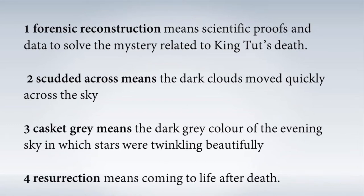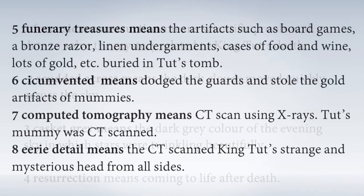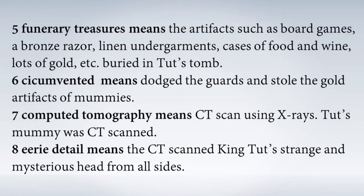Forensic reconstruction means scientific proofs and data to solve the mystery related to King Tut's death. Scudded across means dark clouds moved quickly across the sky. Casket gray means the dark gray color of the evening sky in which stars were twinkling beautifully. Resurrection means coming to life after death. Funerary treasures means artifacts such as board games, a bronze razor, linen undergarments, cases of food and wine, and lots of gold buried in Tut's tomb. Circumvented means dodging guards and stealing gold artifacts of mummies. Computer tomography means CT scan using X-rays. Eerie details means the CT scan captured King Tut's strange and mysterious head from all sides.